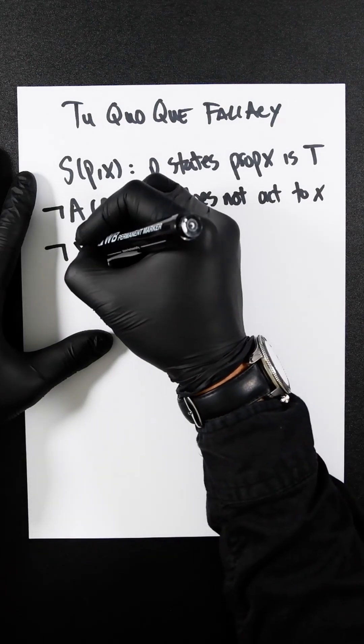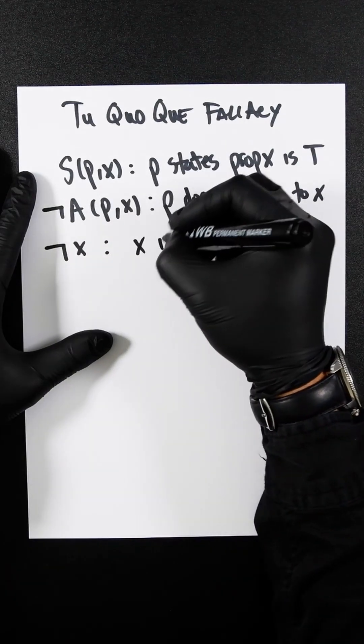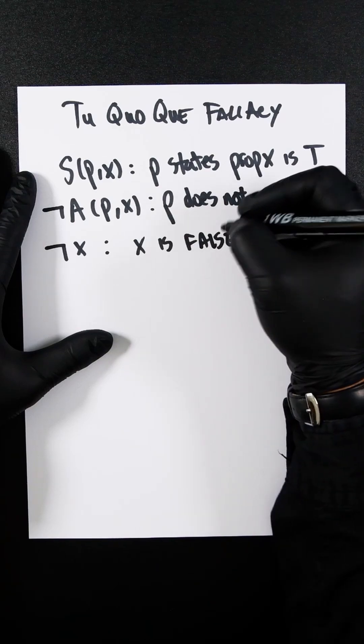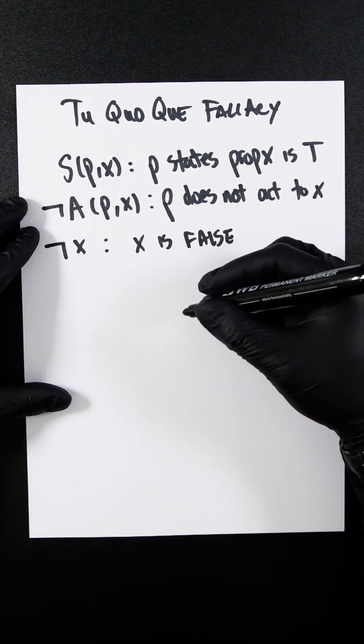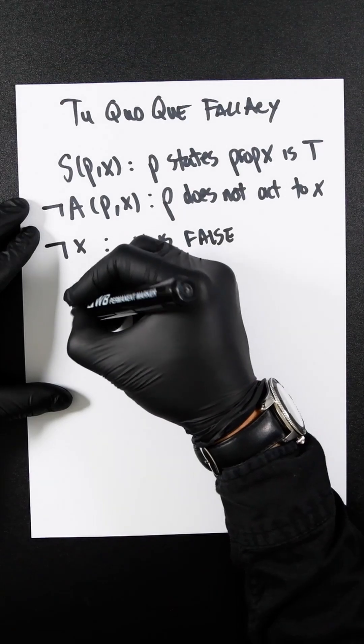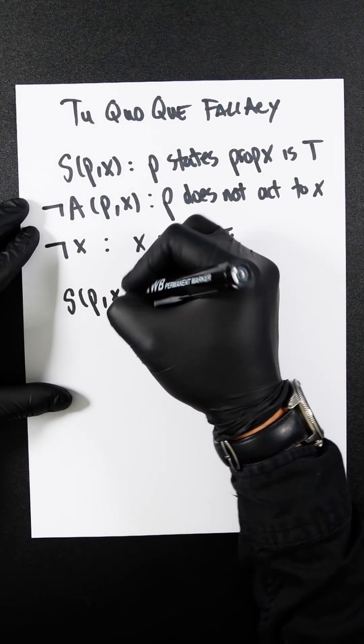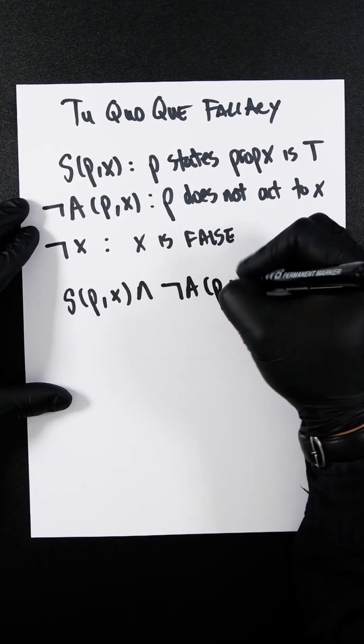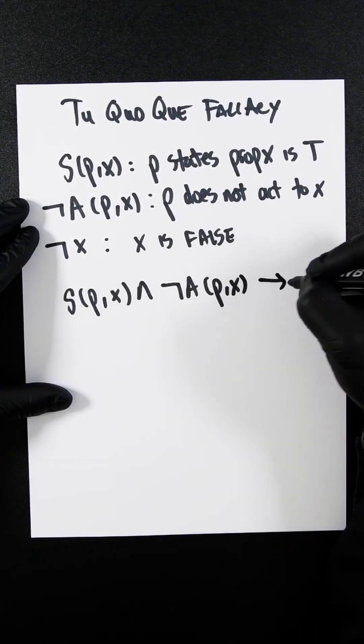And then we have not X, which is obviously X is false. So the fallacious inference is S(P,X) and not A(P,X), if then,